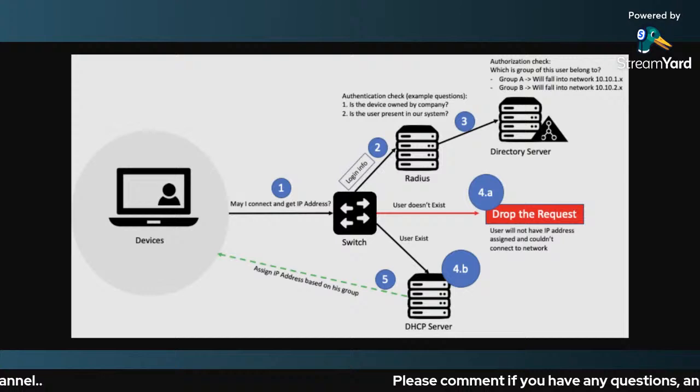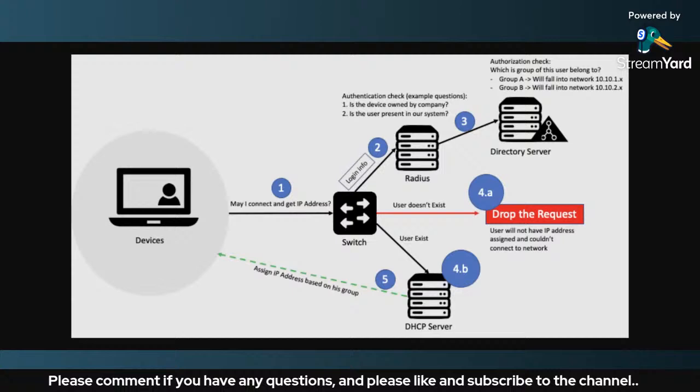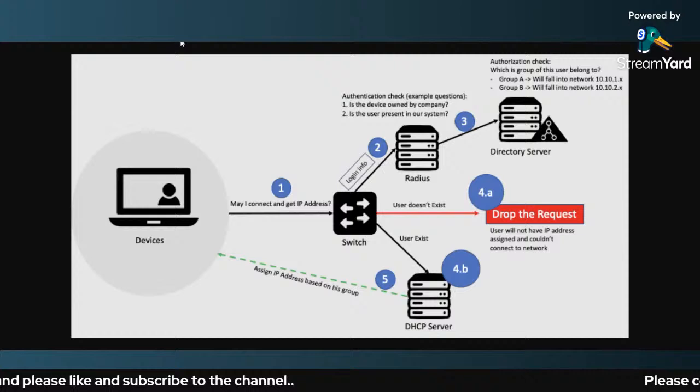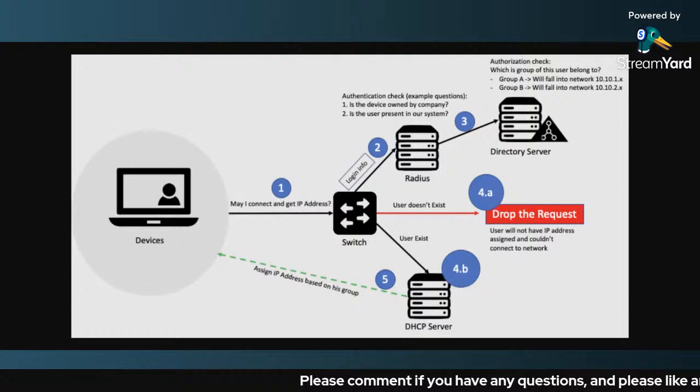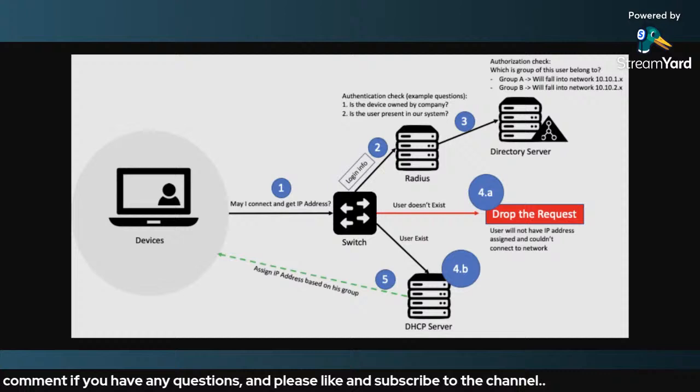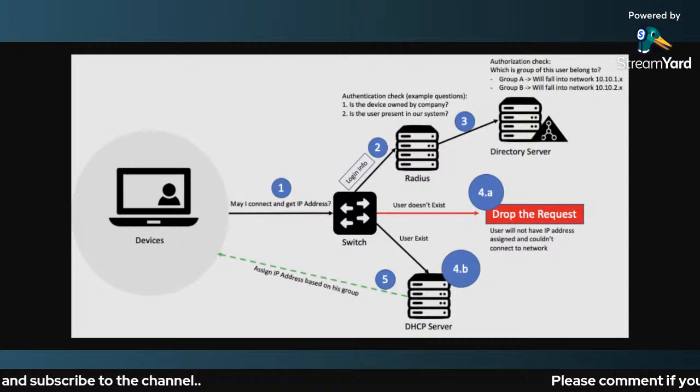Normally it would get the IP address from the DHCP server, but not so quickly in the case of a NAC solution. The switch actually passes the device information to a RADIUS server — Remote Authentication Dial-In User Service. Instead of passing the request to the DHCP server, it passes it on to the RADIUS server.